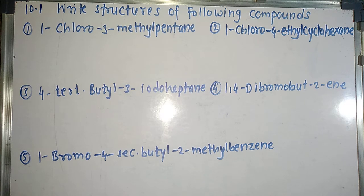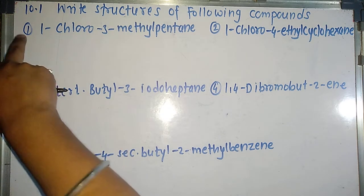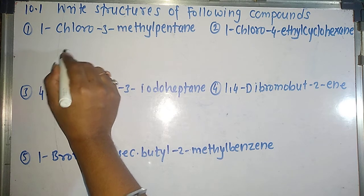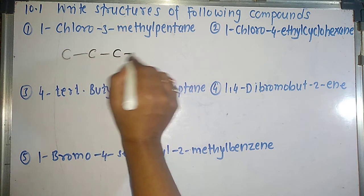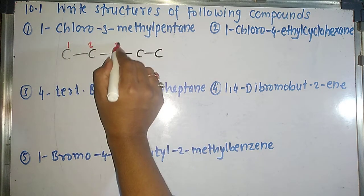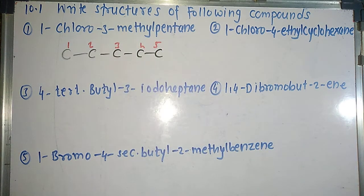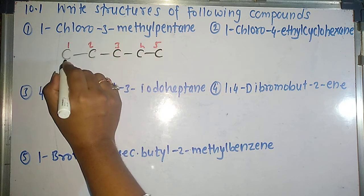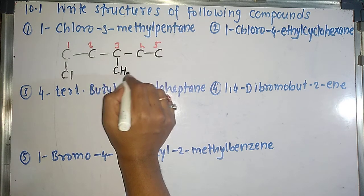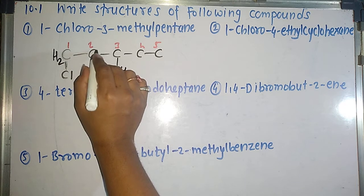Hello everyone. Now we'll see the question from NCERT. Our chapter is haloalkanes and haloarenes. Our first in-text question is 10.1: write structures of the following compounds. The first structure is 1-chloro-3-methylpentane. Pentane means 5 carbon atoms, so I will draw 5 carbon atoms in the longest chain: 1, 2, 3, 4, 5. At position 1 I'm having chlorine, and at position 3 I'm having methyl, which means CH₃.